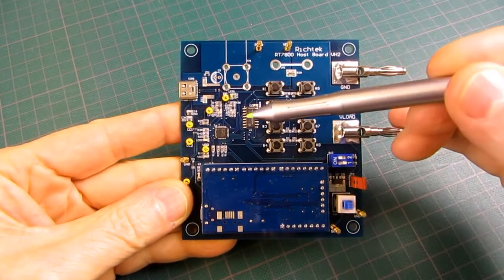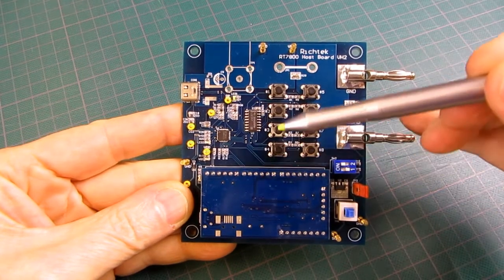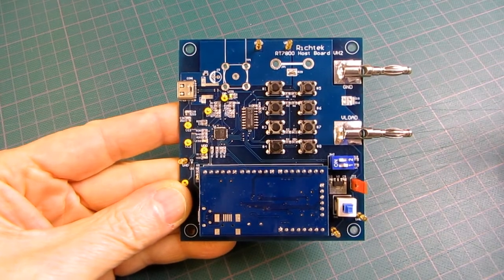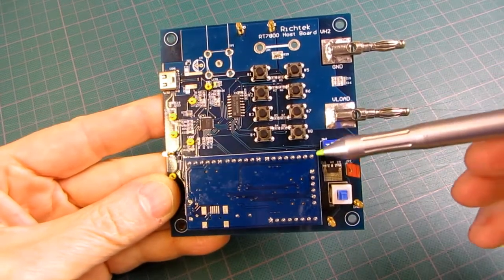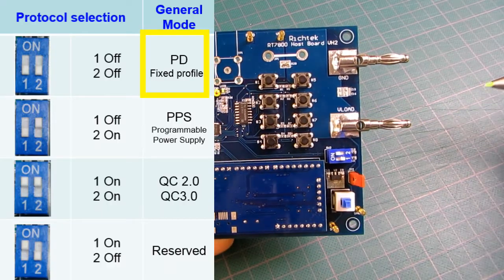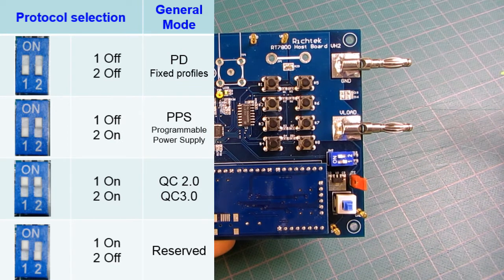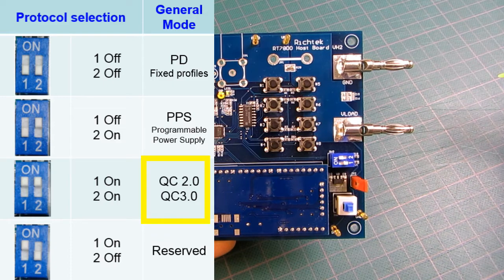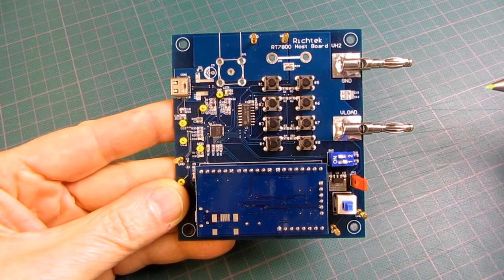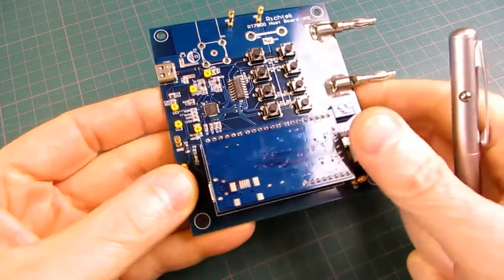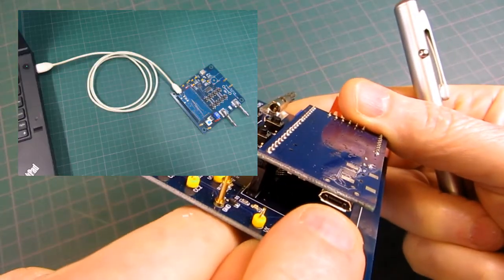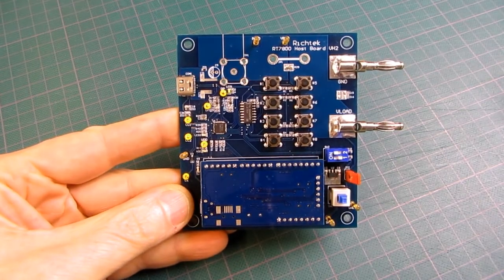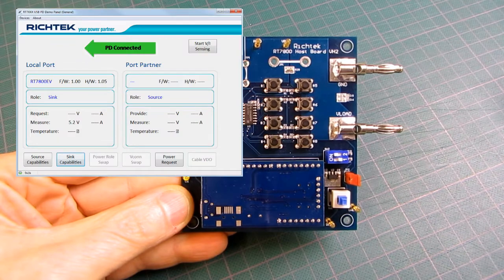It has an on-board RT7800 USB port controller with 8 push-button switches for selecting different power profiles. The DIP switches can be used for selecting different modes like fixed voltage profile or programmable power supply modes. It also supports legacy charging protocols like QC 2.0 and QC 3.0. The separate board is a USB I2C bridge which can be used to connect the board to your PC for programming different firmware into the RT7800 IC, in which case you can also control the load board via your PC.